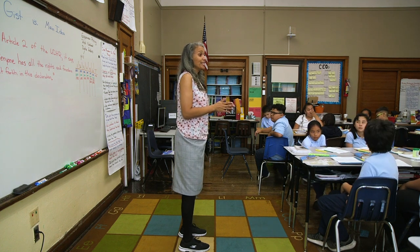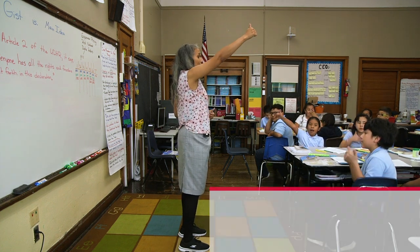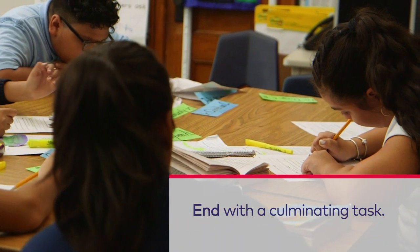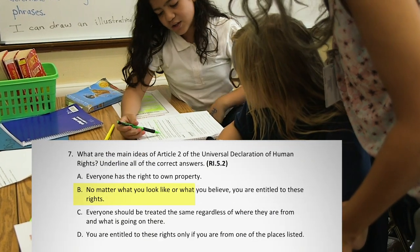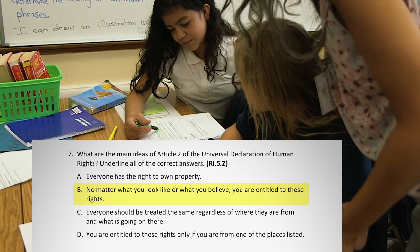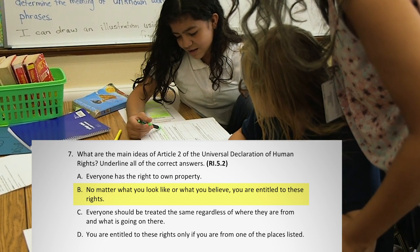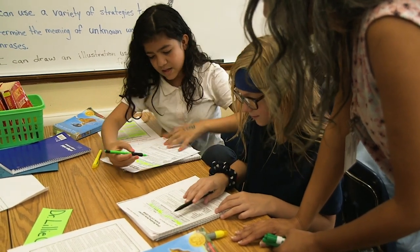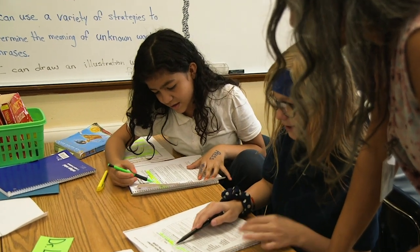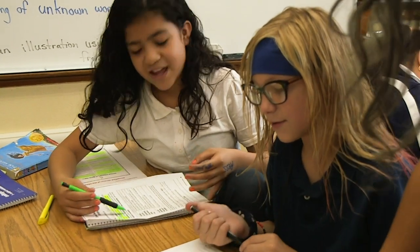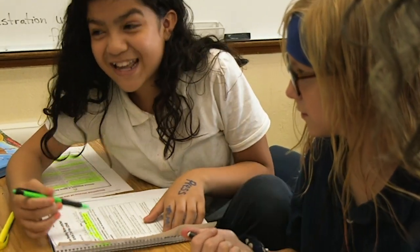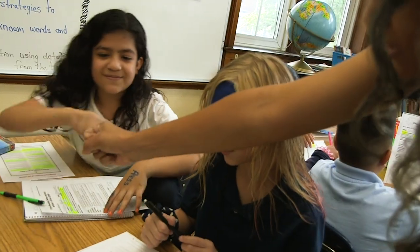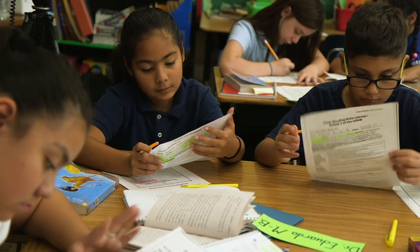Did we determine the two main ideas? Give me a thumbs up. Drop those in main idea boxes one and two. Read it to me: No matter what you look like or what you believe, you are entitled to this right. Do you have any text evidence to prove that? Everyone is entitled to all these rights and freedoms without any kind of distinction. Equal pay for equal work, so nobody is different like other people.